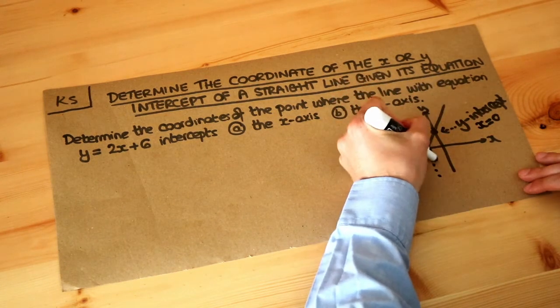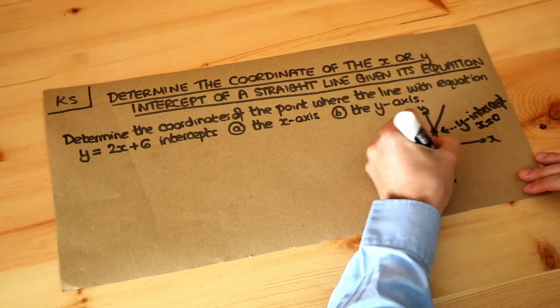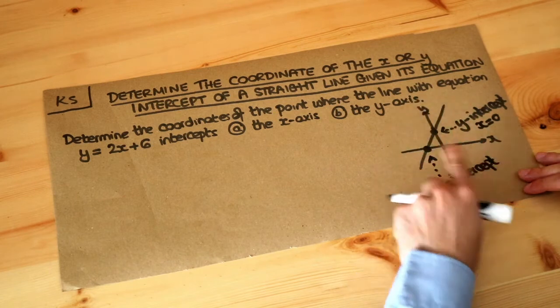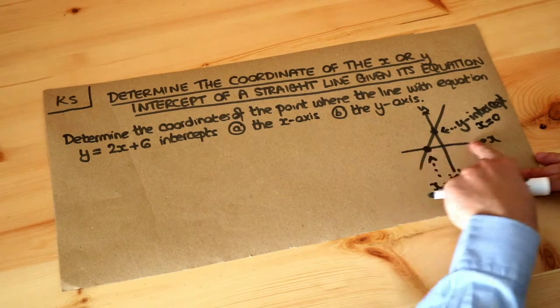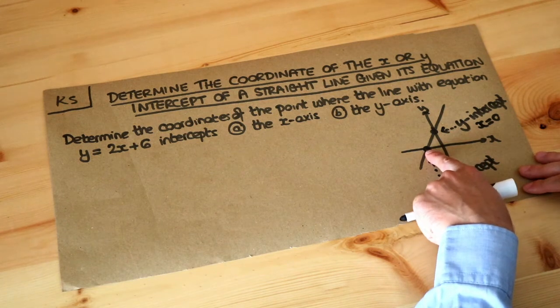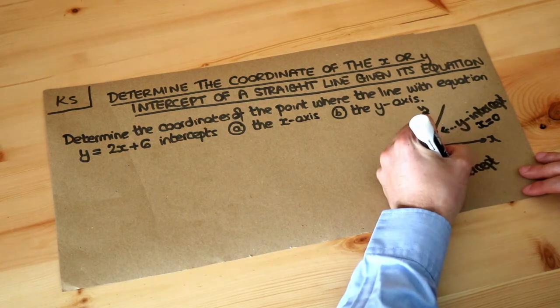So this is known as the x intercept. And if we think about the coordinate of this point, well we don't know what the x value is. We don't know how far along the x axis we are. But we do know that the y value here is guaranteed to be zero.